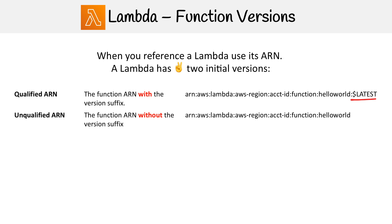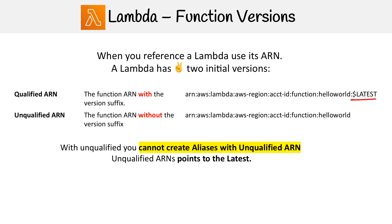Unqualified is where you have nothing on the end. When you are programmatically referencing your lambda using an ARN, you can use unqualified, which always points to the latest version. The tradeoff is that you cannot use an alias with an unqualified ARN. And if you're wondering what aliases are, that's what we're going to talk about next.